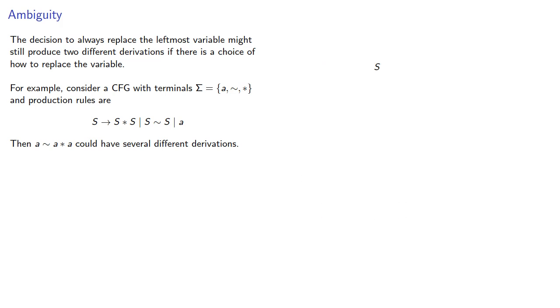Or we could have replaced S with S ∼ S, replace the leftmost variable with S ∼ S again, then replace the leftmost variable repeatedly, which gives us a different production.